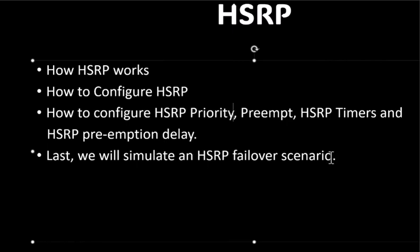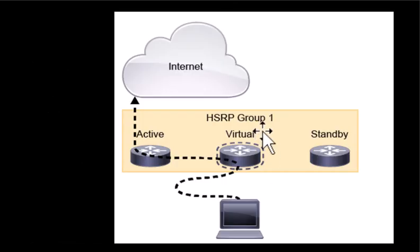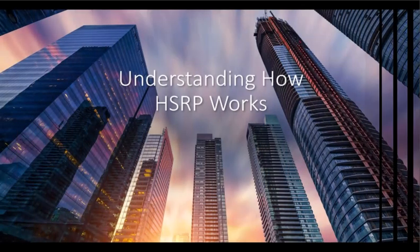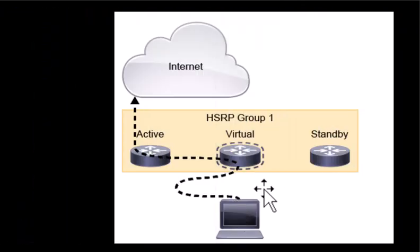I'm going to fail the active HSRP device and show you how the standby is going to pick up the active role. Before going into the lab, let's look at how HSRP works from the theoretical perspective, and then we'll go into the lab and start to configure HSRP. HSRP is a First Hop Redundancy Protocol that allows for transparent failover of the first hop IP device, which is the gateway.